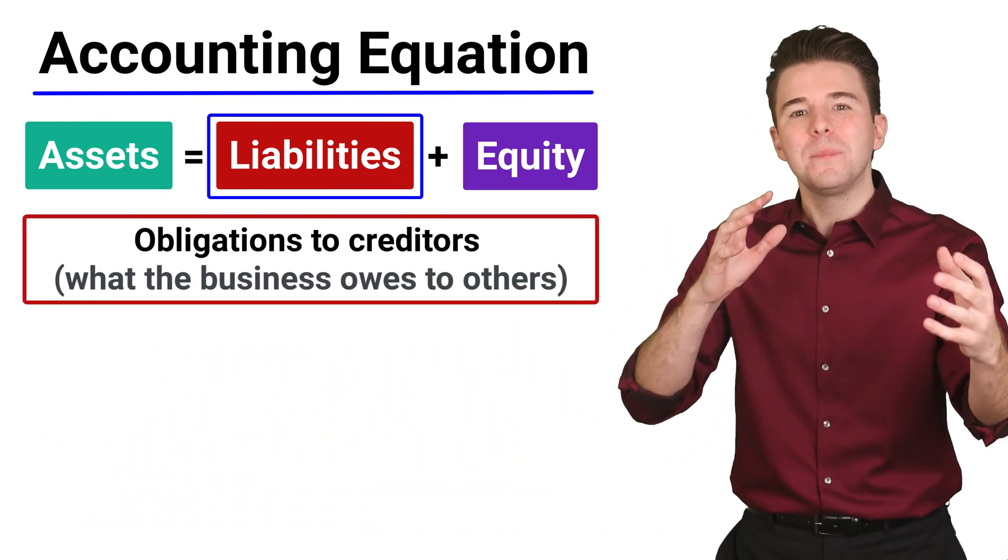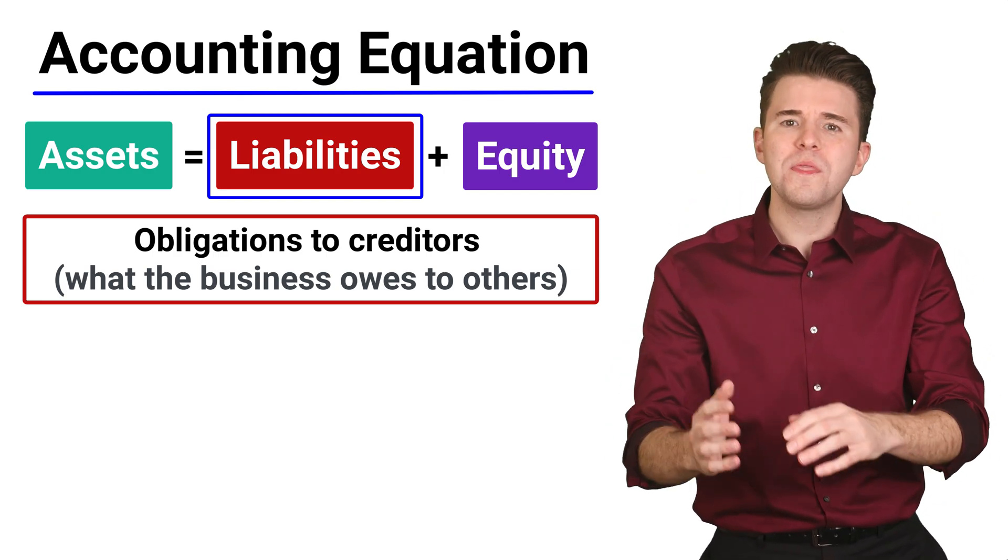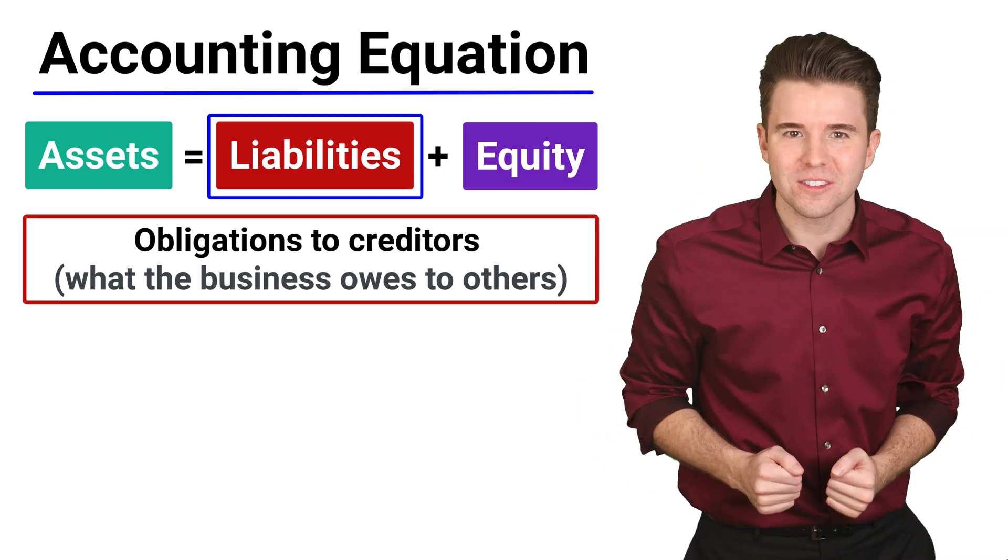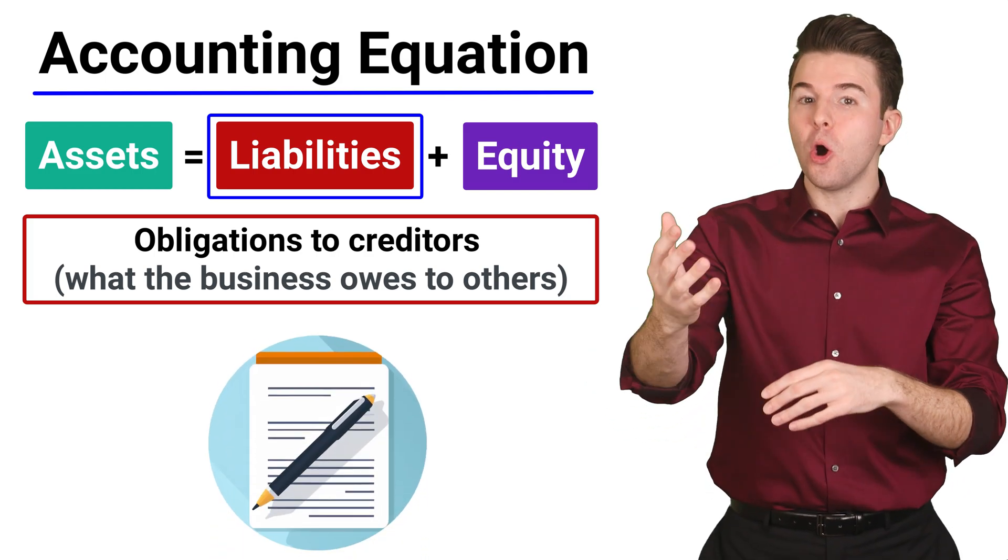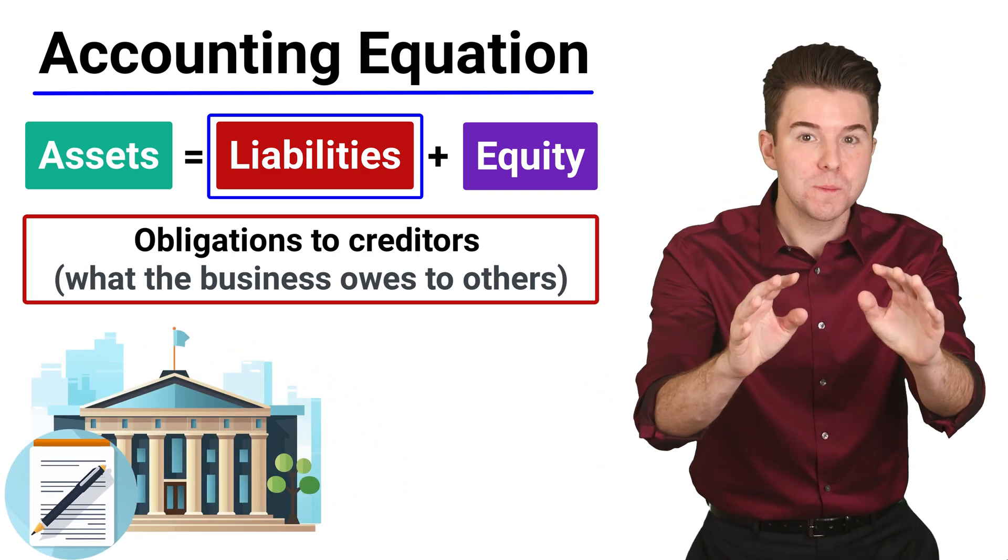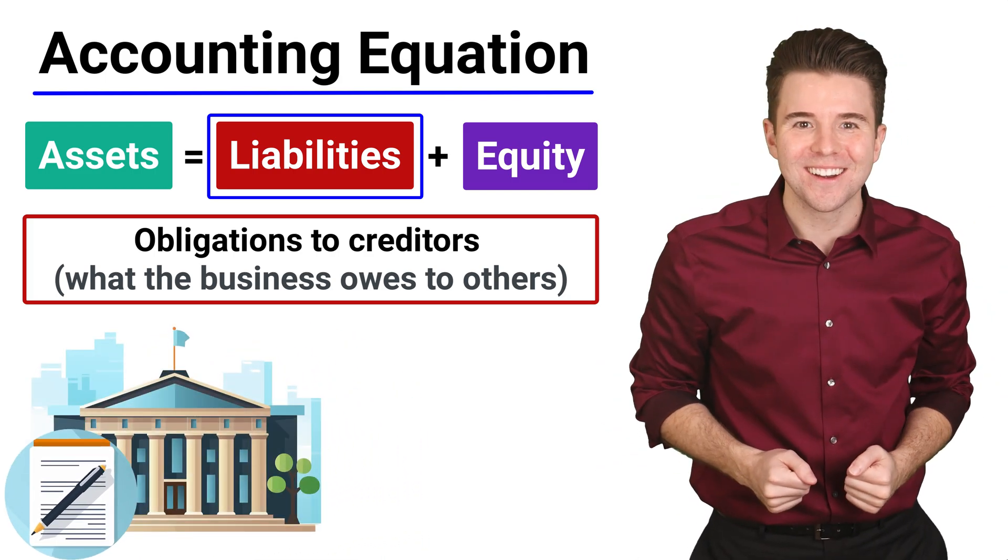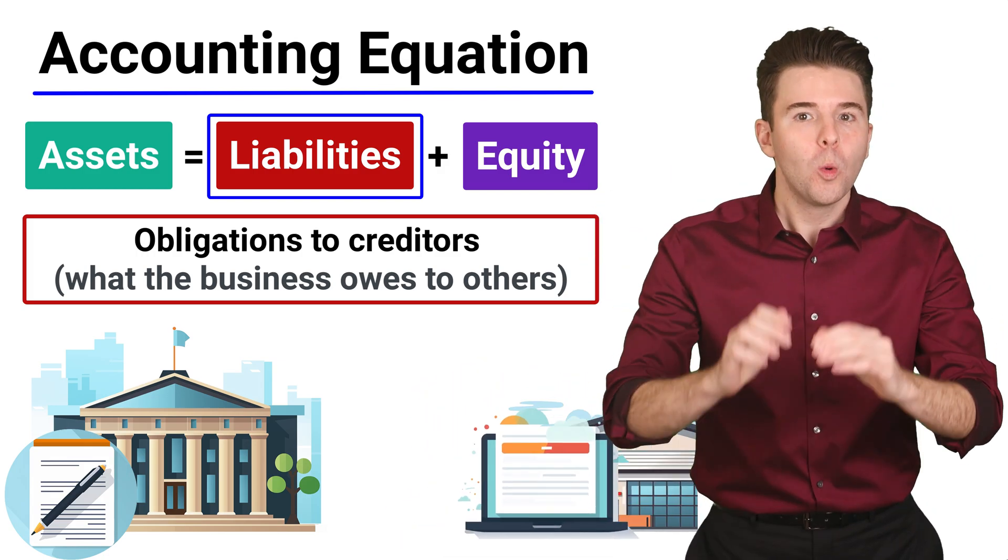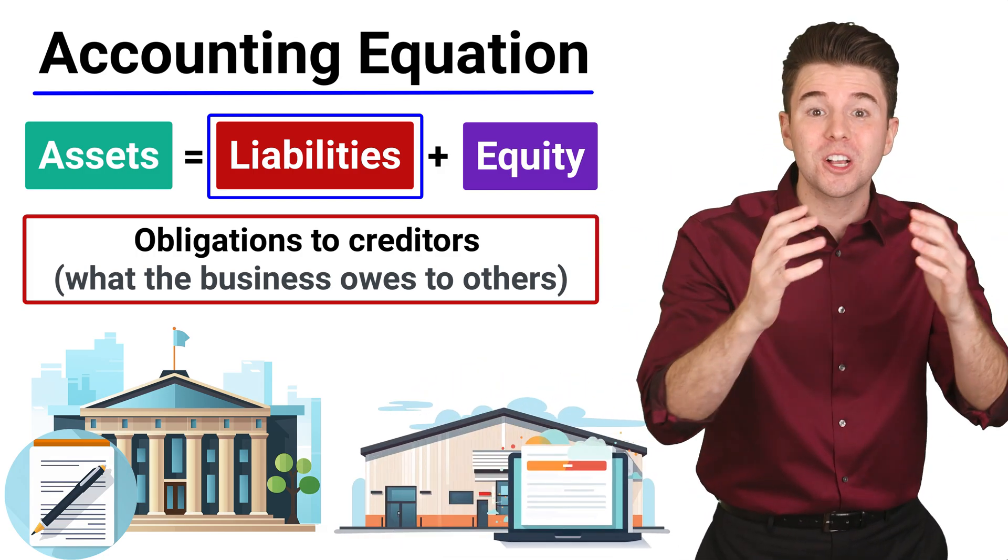Liabilities are obligations to creditors or what the business owes to others. An example is a note or loan payable, which is money owed to a lender. Another example is accounts payable, which is money owed to a supplier for goods.